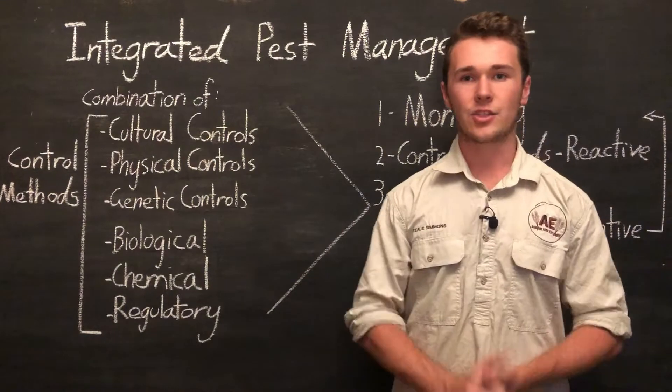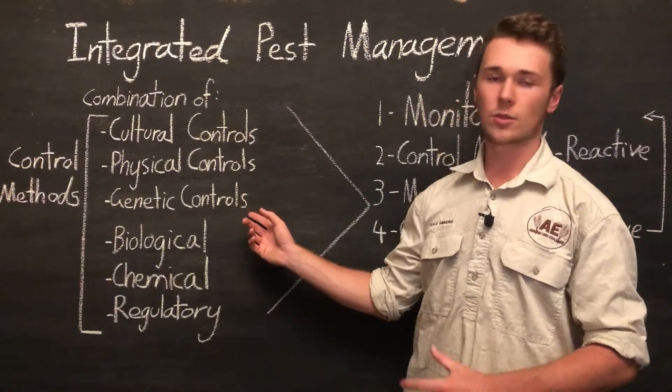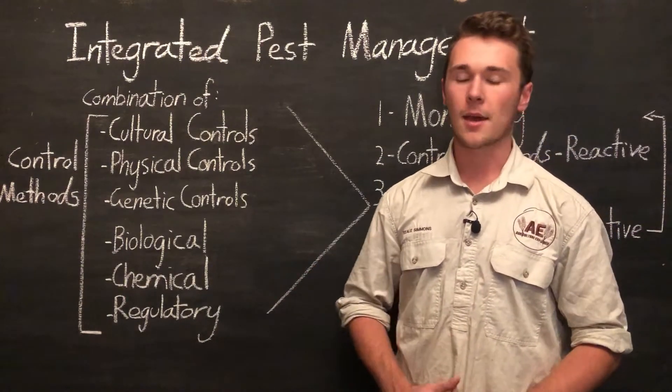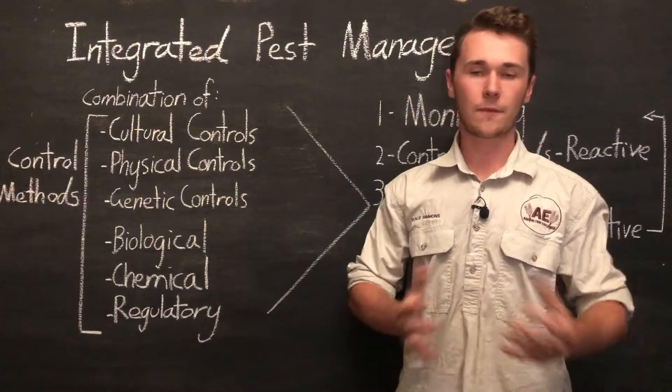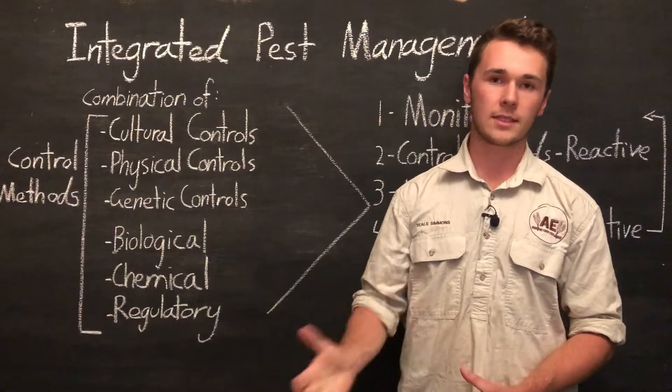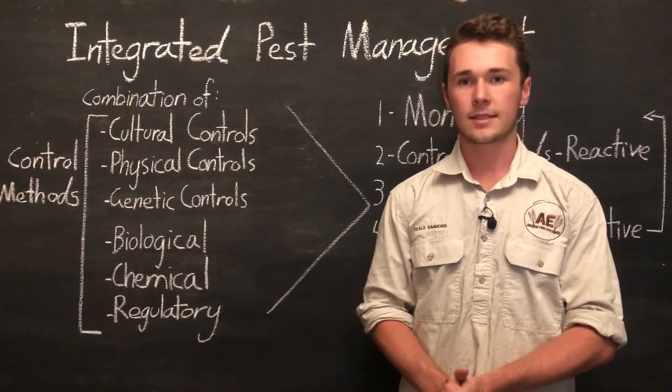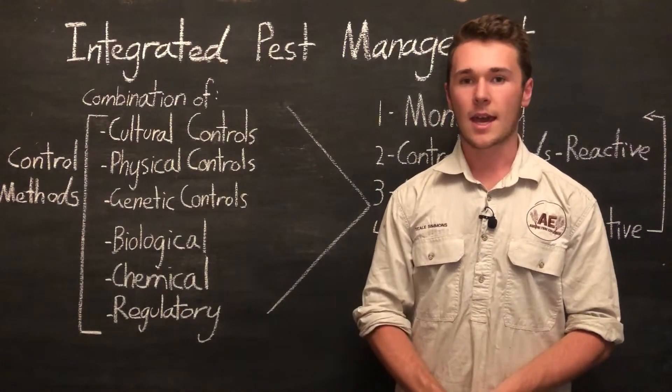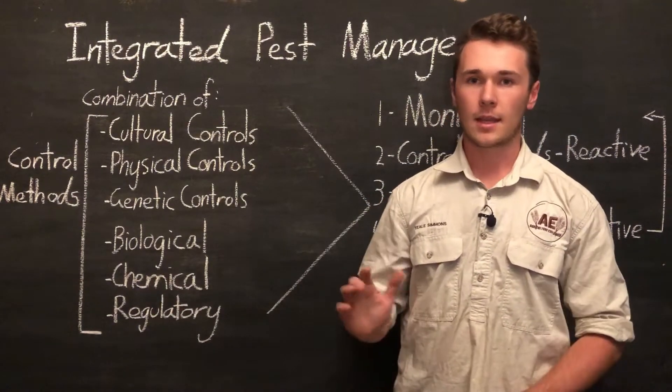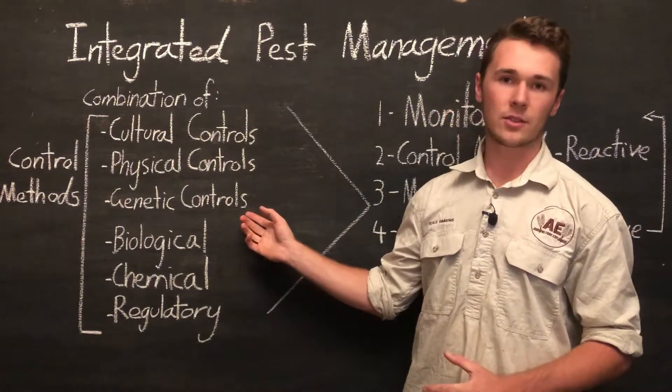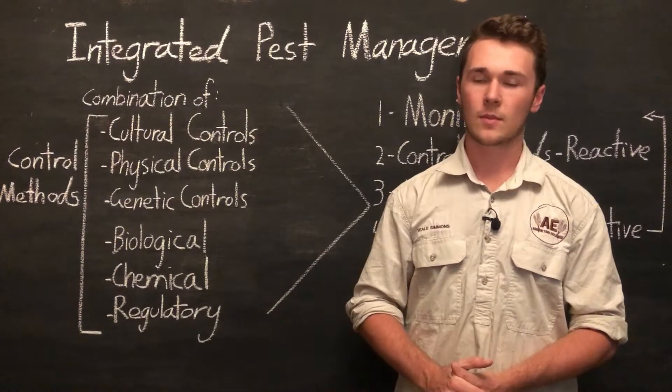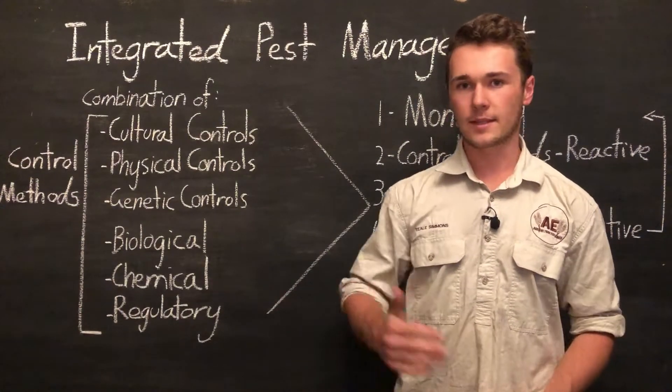Next we have genetic controls. This is improving your genetics to favor one characteristic or a couple of characteristics to make that species more resilient to the pest. So for example if we have cattle and it's a tick prone area, we might move to Bos indicus cattle which have a finer skin so that they can feel the tick and flick them off. So genetic controls, making sure that the species of whatever we're farming, either plant or animal, are more tolerant to the pests that we're having problems with.